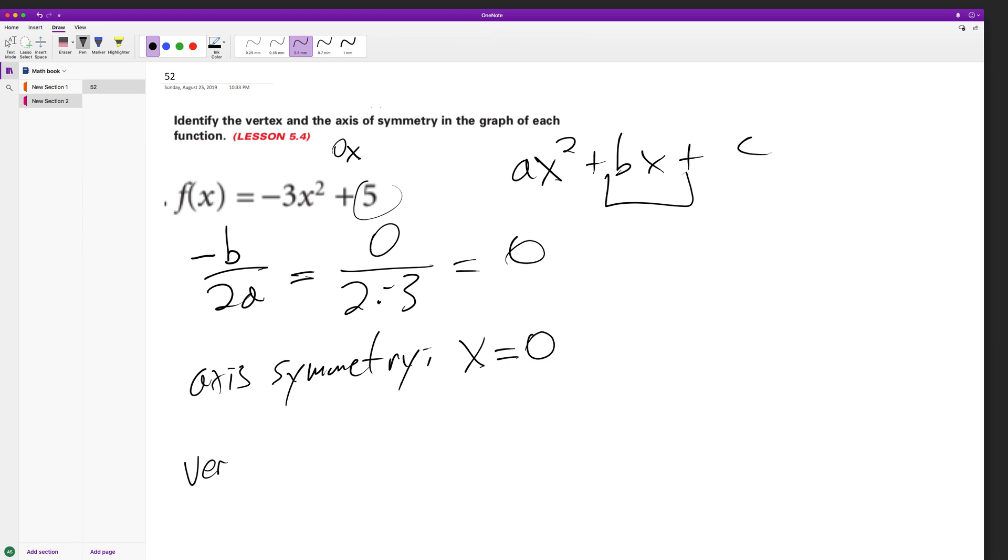And vertex. So when we plug in 0, we get our 5. So we have 0, 5.